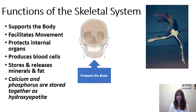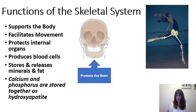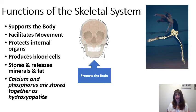The skeletal system is important because it supports our body, allows us to move efficiently, and helps protect internal organs. The brain and spinal cord are entirely encased in bone because those organs are extremely important to the proper function of our body. Bone also helps produce blood cells, stores minerals and fat, and can release those. Calcium and phosphorus are stored together in bone as hydroxyapatite.